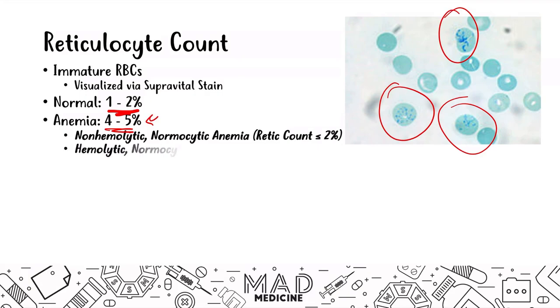In hemolytic anemia, because you are lysing red blood cells — because they are being burst — your body realizes it needs to amp up the production of red blood cells in the bone marrow. That's where you're going to see specifically the increase in reticulocyte count. In normocytic hemolytic anemias, if you see an increase in reticulocyte count, you will know that this is going to be a hemolytic anemia, not a normocytic anemia that is non-hemolytic.